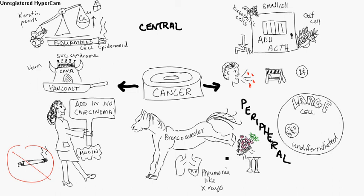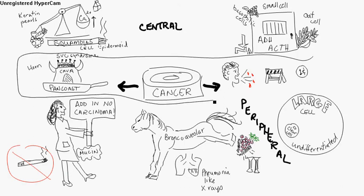Here is the picture for lung cancer. The cancer is in the center, and these items in the center are symptoms and complications that can happen with all types of these cancers. These apply to all of the different types. You've got things like cough and hemoptysis. It is an obstructive disease — you get a bronchial disruption and you also get coin lesions.